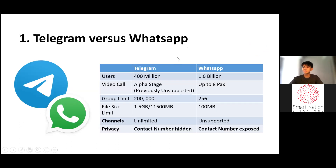Firstly, the difference between Telegram and WhatsApp. Currently, Telegram has approximately 400 million users, but WhatsApp has 1.6 billion. Telegram's video call feature, which was previously unsupported, is now in its alpha stage, while WhatsApp can establish a video call for up to 8 participants. Telegram's group limit is 200,000, while WhatsApp has a group limit of only 256. On Telegram, the file size limit is 1.5 gigabytes, while WhatsApp only allows files smaller than or equal to 100 MB.